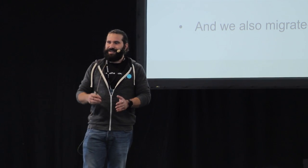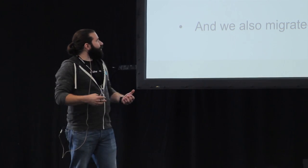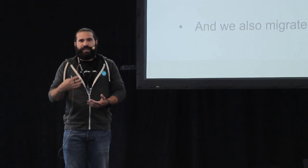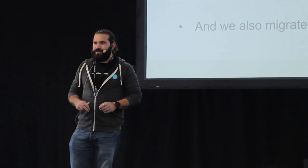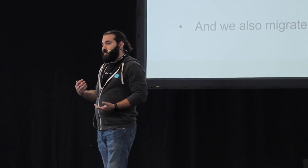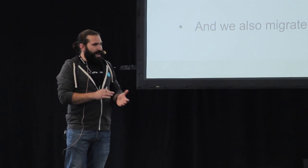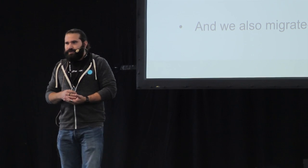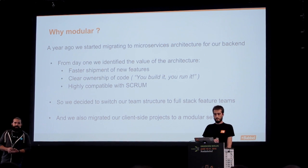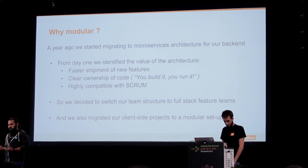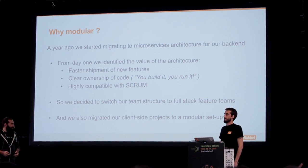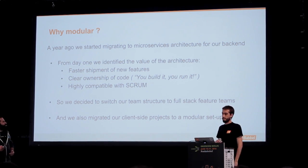At that point, it was only the API affected, and it was way faster than us. They managed to have clear ownership of code. They made the Amazon motto of 'you build it, you run it' true. We figured out that it works way better with Scrum. So after a few months, we decided to change our team setup to follow that pattern — to have full-stack teams — and we came to a point where we had to update our client project setup to take advantage of this configuration.